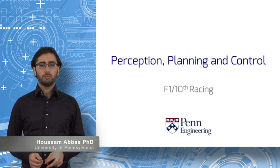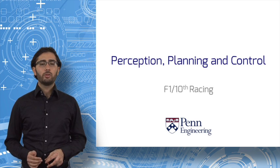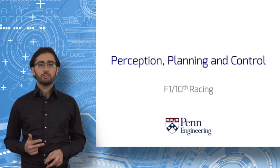This is week two. Last week, we gave an overview of the three key operations involved in building autonomous race cars: perception, planning, and control.